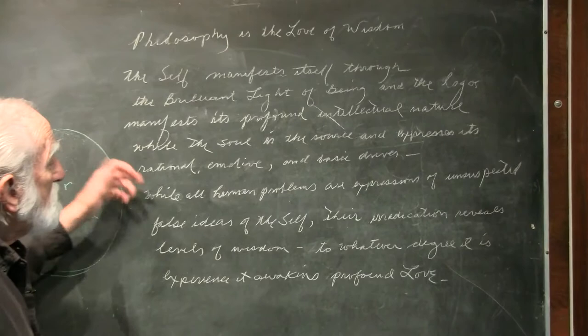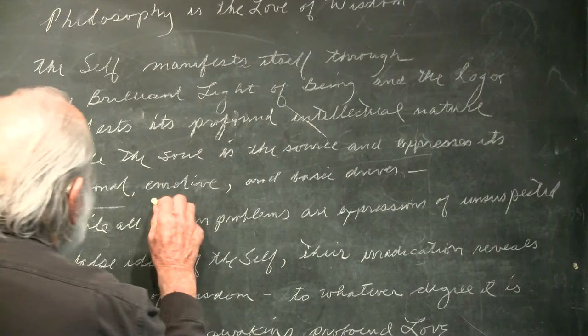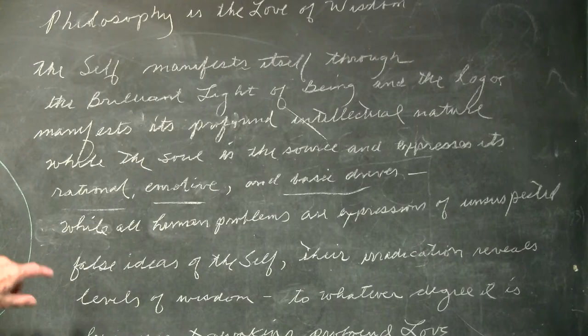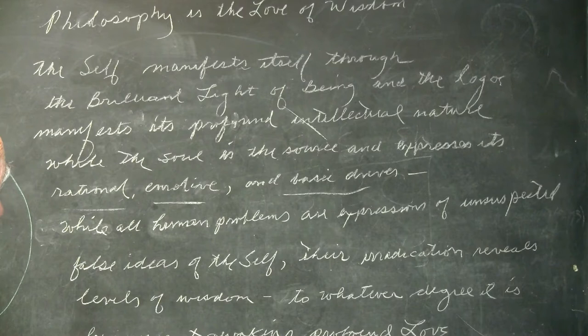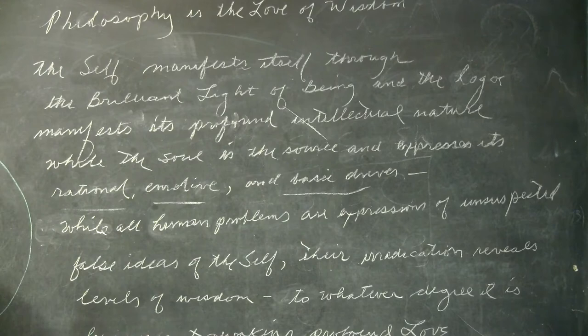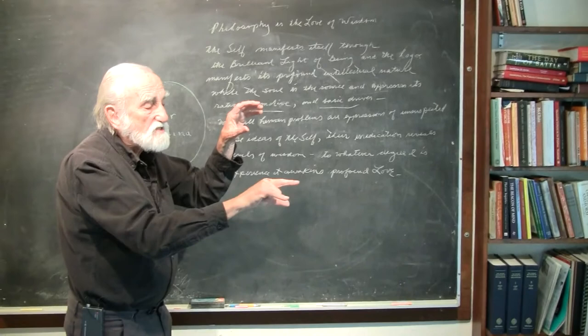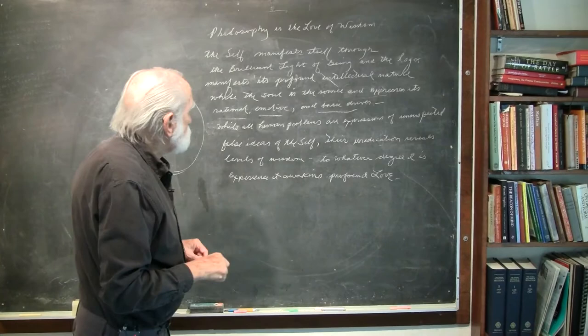The soul is the source and expresses the rational, emotive, and the basic desires of man. Therefore, the soul expresses itself in the human world, in the everyday world, through rational, emotive, and desires of basic drives. Therefore, there's an interconnection between soul and self. The soul is the means through which the self expresses itself rationally, intellectually, and through its drives.